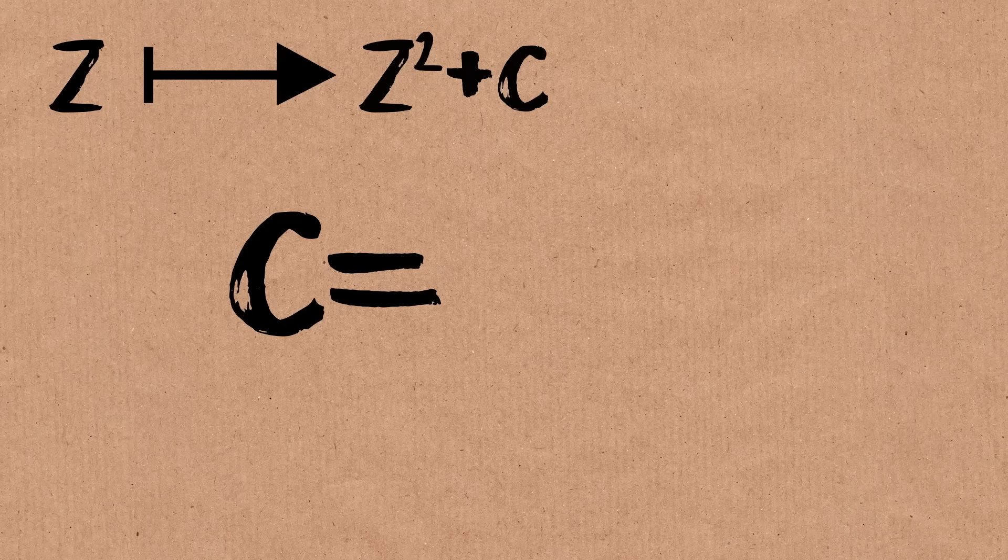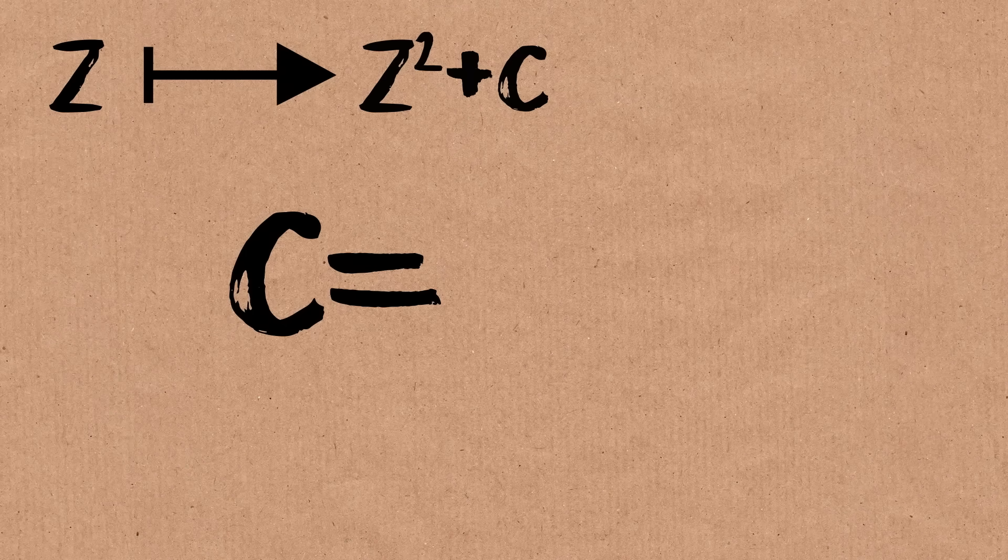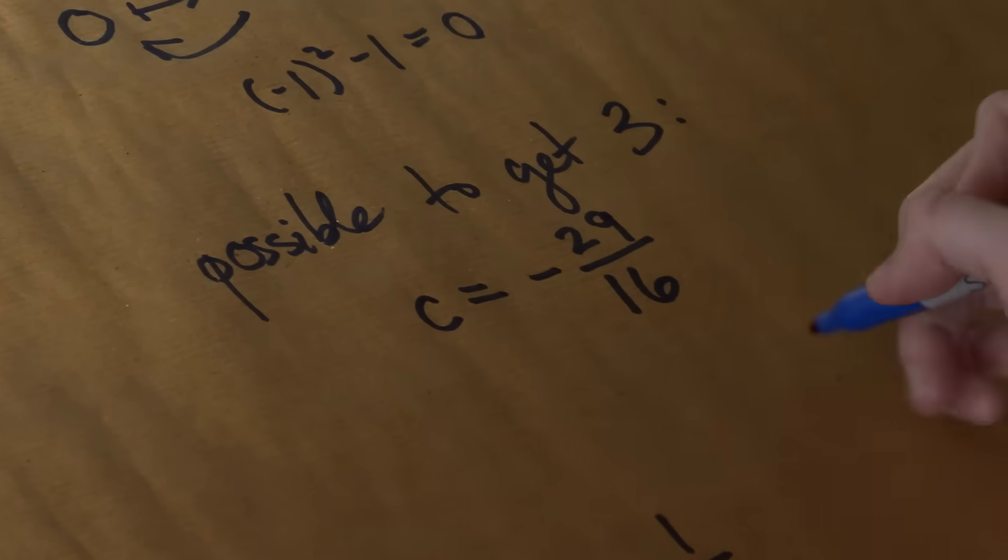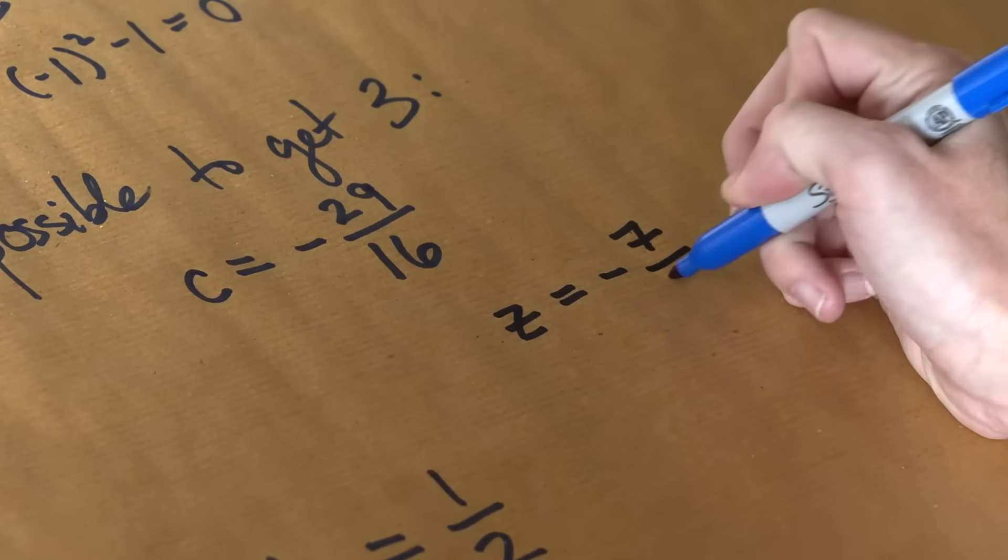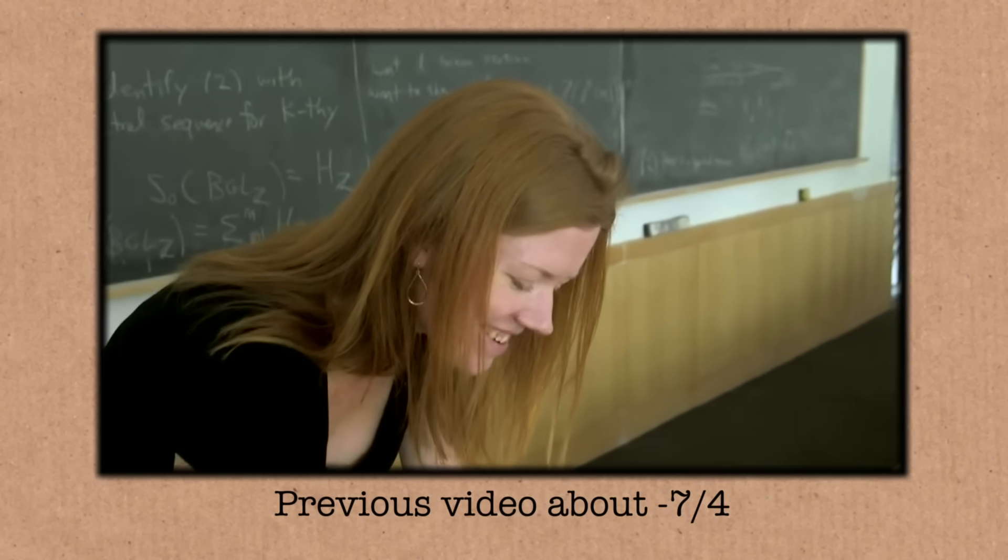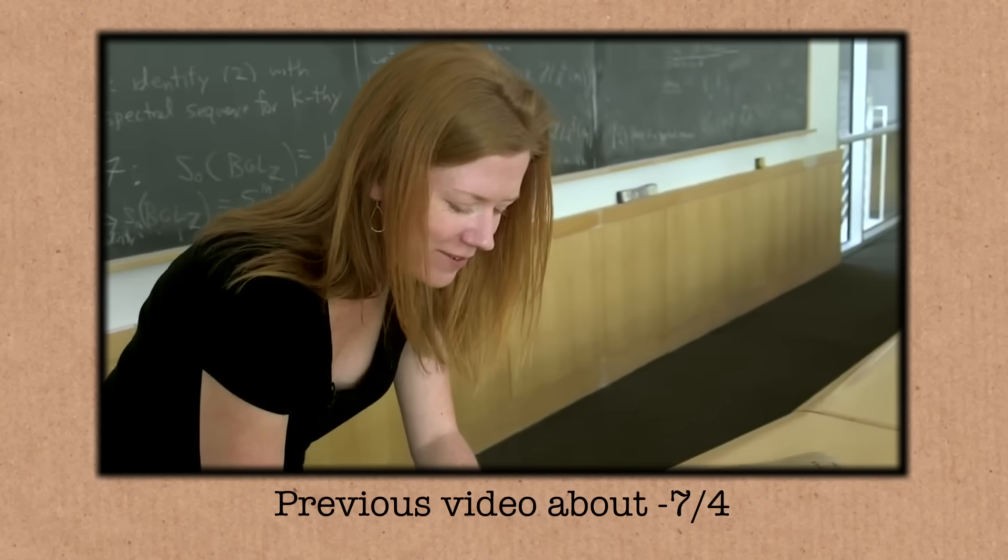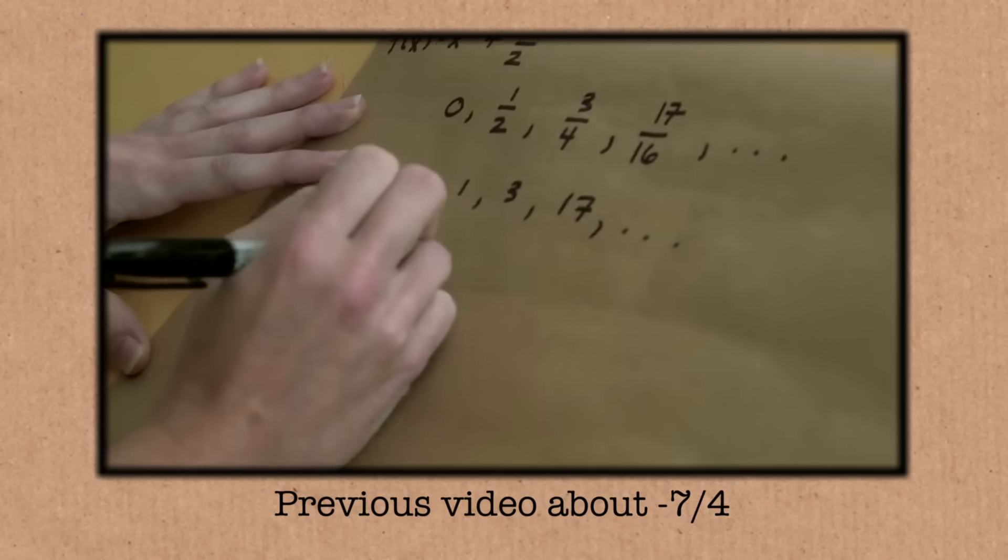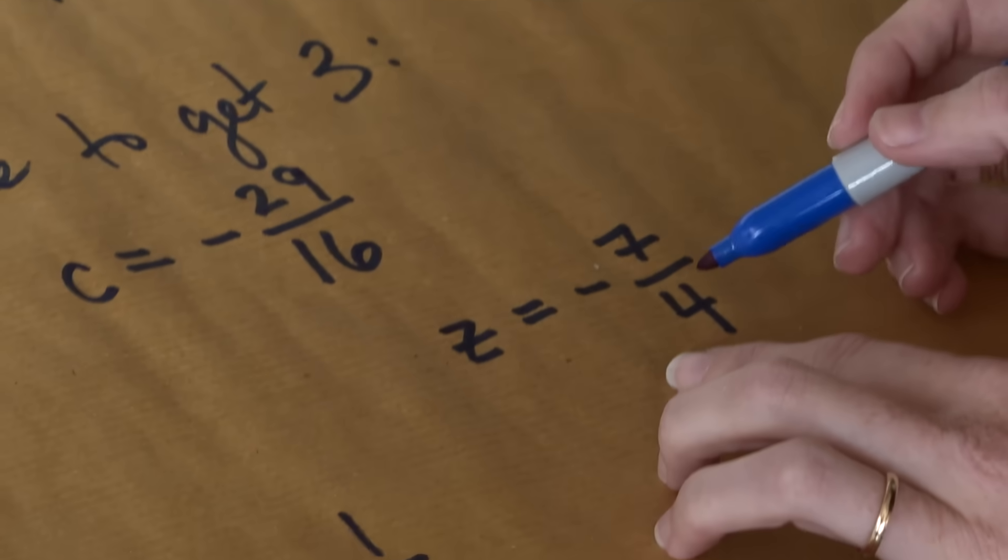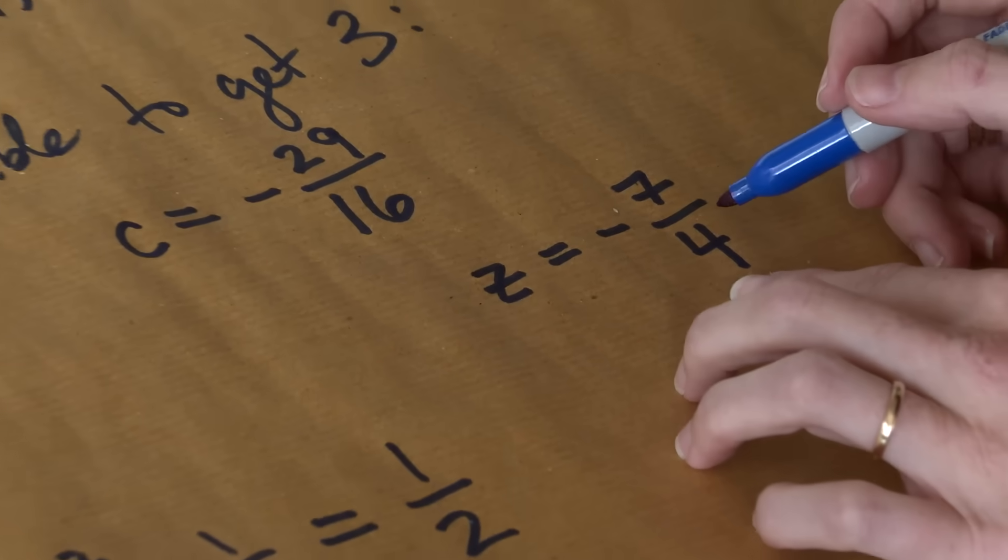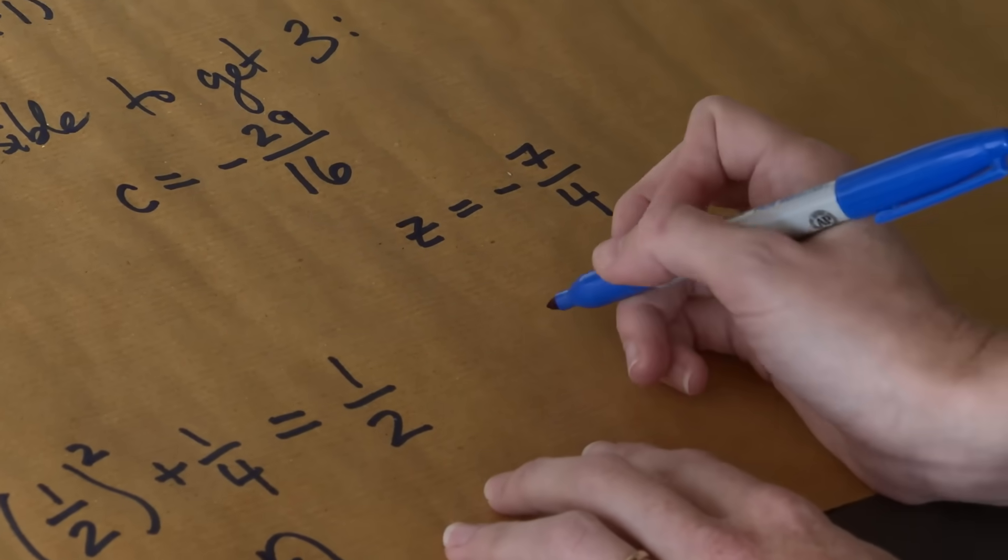I think it's c is equal to minus 29 over 16. And you start with z equals minus 7 fourths, which we've actually talked about this number before. It's kind of a tricky one in dynamics. That was your first video. I know, I know. Reminiscing about the days. All right, so if we start with z equals minus 7 fourths. Oh man, I really don't want to do these computations, but let's do it.